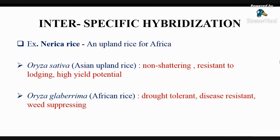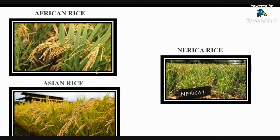Here are some examples of inter-specific hybridization. A well-known example is NERICA rice. Previously, Oryza glaberrima was cultivated in Africa, which was drought tolerant, disease resistant, and weed suppressing, but there was a problem of shattering and lodging and low yield potential. So it was crossed with Oryza sativa, and a new species was developed known as NERICA rice, which was well adapted for African conditions with no problem of shattering and lodging, and the yield potential was also high. These are the illustrations of African rice, Asian rice, and NERICA rice.